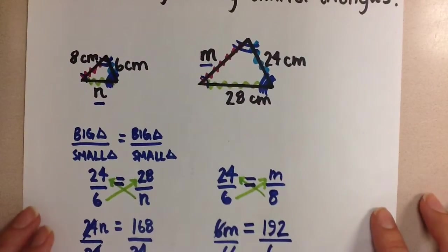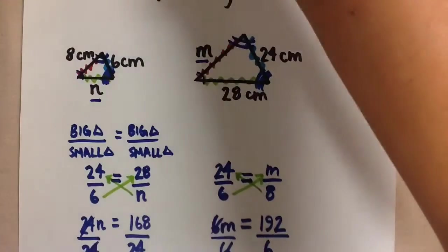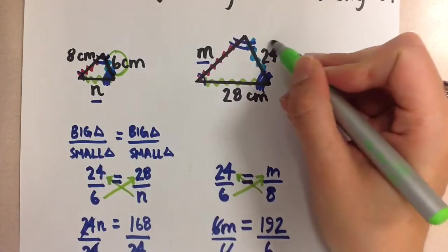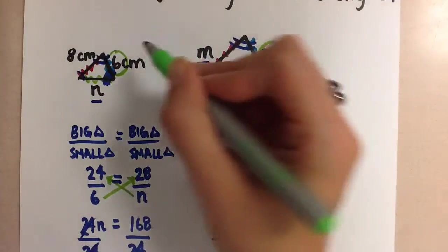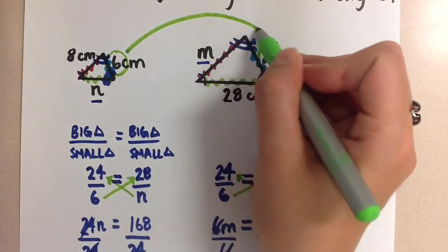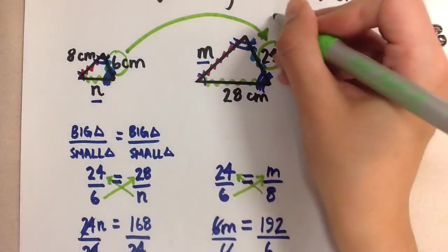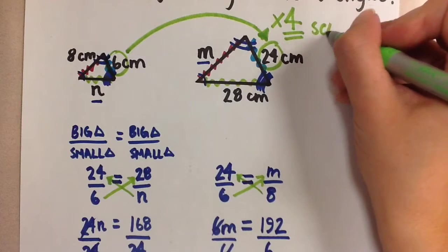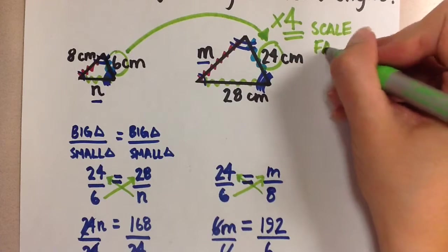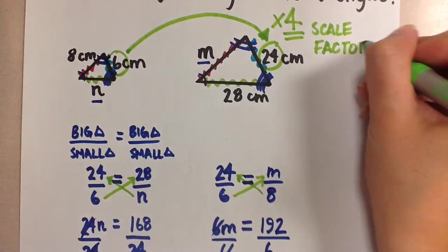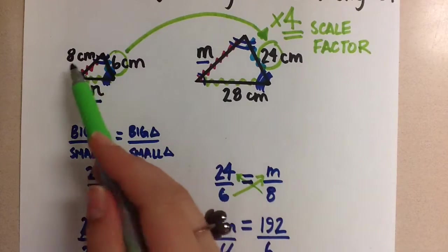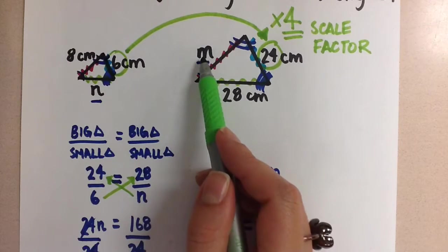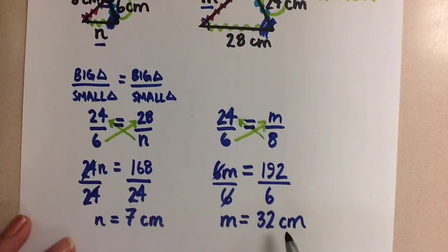Now we can check that by going back and looking at our scale factor. So here, this 6 corresponds with the 24. To go from 6 to 24, we multiply by 4. So this number is what we call the scale factor. That means that 8 times 4 should give us 32 for the m side, which is what we got here.